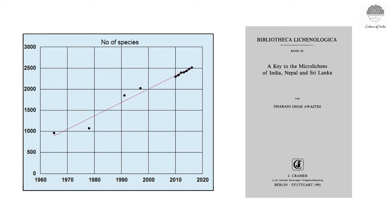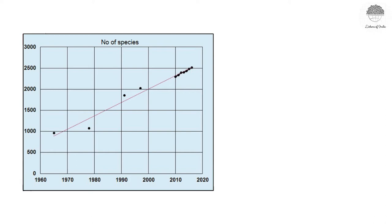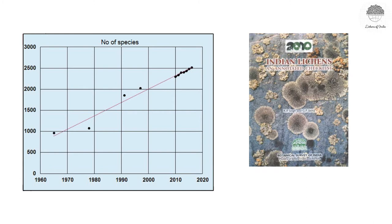In 1997, Singh and Sinha listed about 2021 species of lichens. Then recently, in 2010, Singh and Sinha again produced a monumental work — an annotated checklist of Indian lichens — where they listed 2305 species of lichens. This is an excellent book consisting of all the lichens of India described till then.